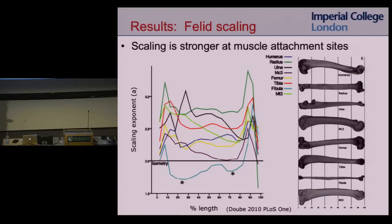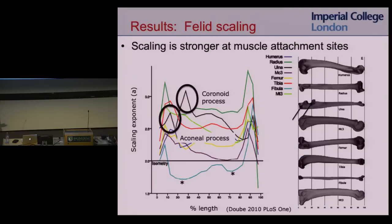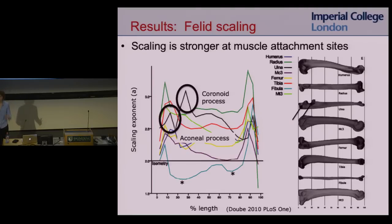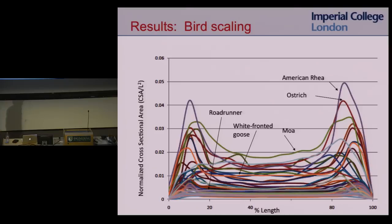We also know the scaling is strong at the muscle attachment sites. For example, the tibial crest where the patellar tendon inserts shows a very high scaling peak. On the ulna, the coronoid and conoid processes — also muscle attachment sites — show the same. This indicates that muscle may be scaling as well: as animals get bigger, muscles also get relatively bigger. Here's what the bird data looks like, plotting all 47 birds with normalized cross-sectional area for the femur.